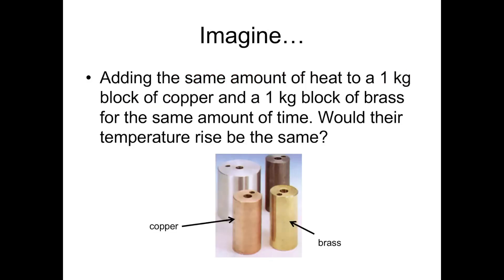So the first thing to imagine is, imagine adding the same amount of heat to one kilogram of copper. And at the same time, you add that same amount of heat to one kilogram of brass, two different materials. You make it a fair test. You put the same amount of heat in for the same amount of time. Would they both rise in temperature by the same amount? Would they both go up 10 degrees? Would they both go up 20 degrees? Or would one rise in temperature more than the other?